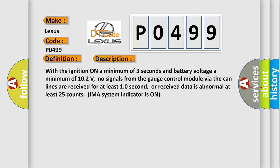no signals from the gauge control module via the CAN lines are received for at least 10 seconds, or received data is abnormal for at least 25 counts. IMAS system indicator is on.